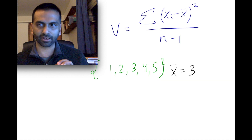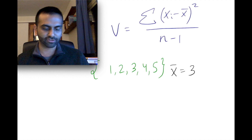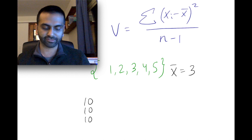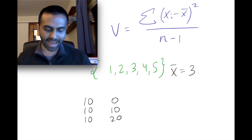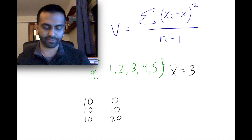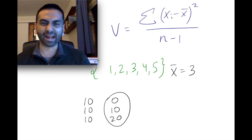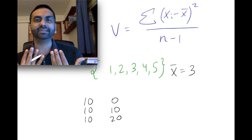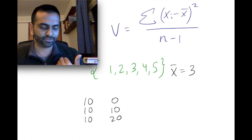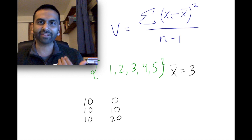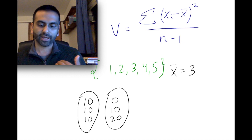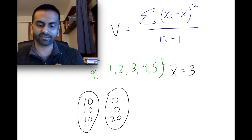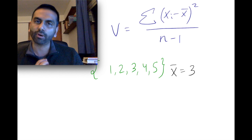Here's a thought experiment: suppose everyone has a value of 10 versus having values of 0, 10, and 20. The average of both groups is 10 — both add up to 30 divided by 3. But the average alone doesn't really tell you how spread out the numbers are relative to each other. The first group isn't spread out at all, so we'd say it has low variance. The second group is really spread out, so it has more variance, even though they share the same average.